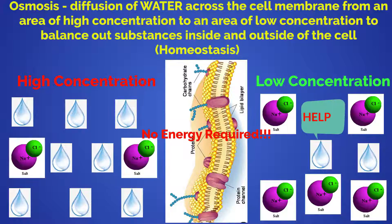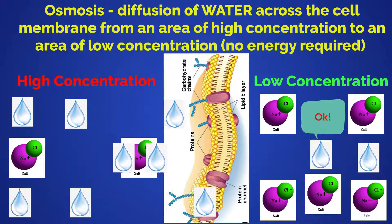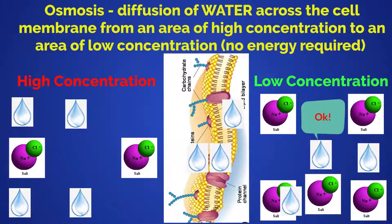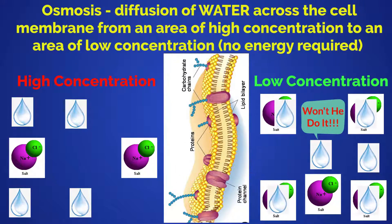Osmosis is another form of passive transport that diffuses water, and water only, across the cell membrane from an area of high concentration to an area of low concentration to balance out substances inside and outside of the cell. This is another great example of cell homeostasis, which is the cell maintaining internal and external balance.